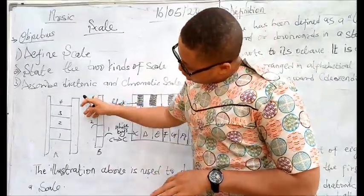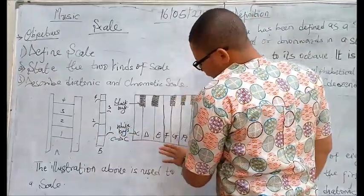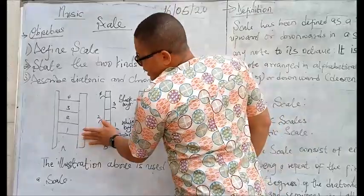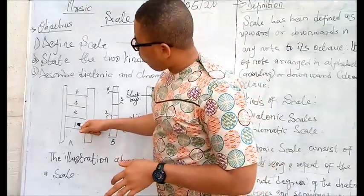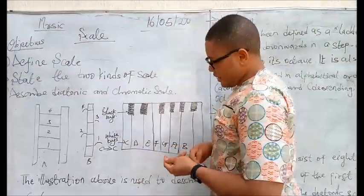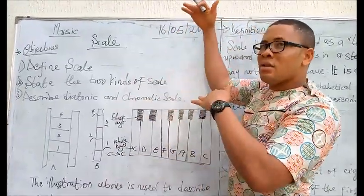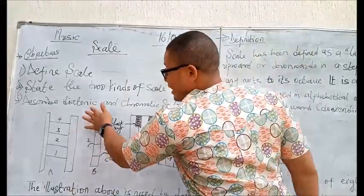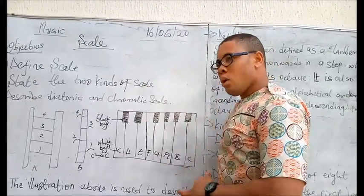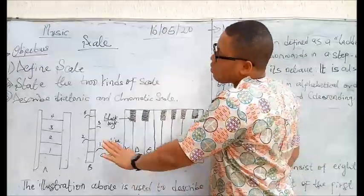Looking at the illustration on the board you can see a ladder and a musical keyboard drawn on the whiteboard. This ladder is numbered from one to four to explain the meaning of musical scale. As you ascend the ladder you are either ascending or descending. Musical scale deals with moving from the lower key to the higher key or from the higher key to the lower key in music.